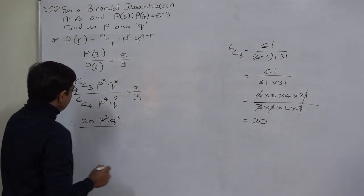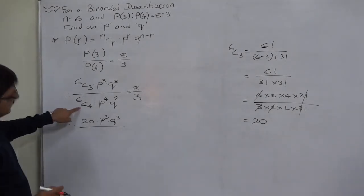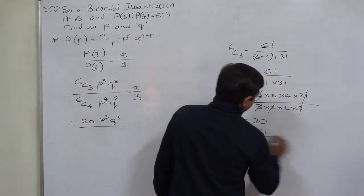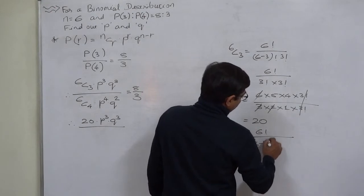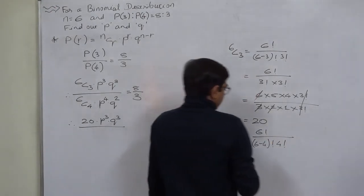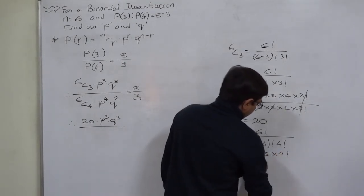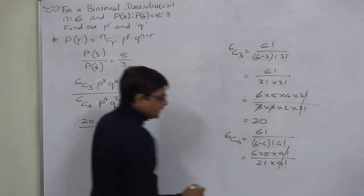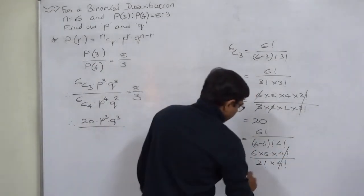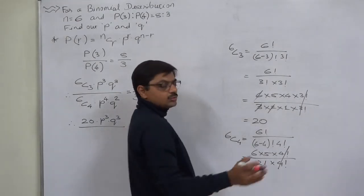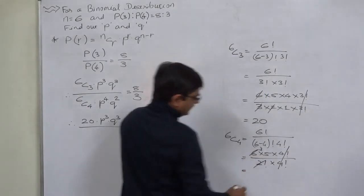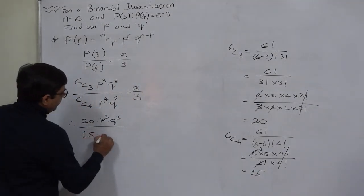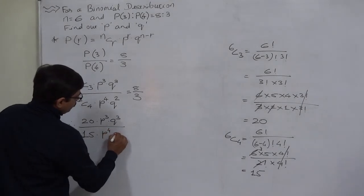Similarly, 6C4 equals 6 factorial divided by (6 minus 4) factorial into 4 factorial. Expanding: 6 into 5 into 4 factorial divided by 2 factorial into 4 factorial. After cancellation of 4 factorials and 2 factorial with part of the numerator, 6C4 comes to 15. So the denominator is 15 into P raised to 4 into Q raised to 2.